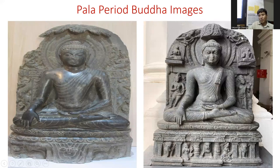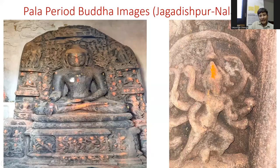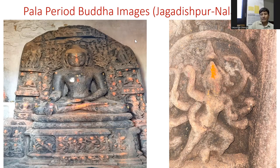During the Pala period, we see extensive use of black stone. The most significant feature of Pala period Buddha images is the Bhumisparsha mudra. Here is Bhumisparsha mudra carved in a single rock monolithic style. Bhumisparsha mudra is associated with the Ashtamahapratiharya scenario — the eight great life events of the Buddha: his birth, Dhammacakkappavattana, Mahaparinibbana, and descent from Tavatimsa heaven to Sankissa, among other great life events. Tantric elements such as Marichi are also depicted in this Buddha image.